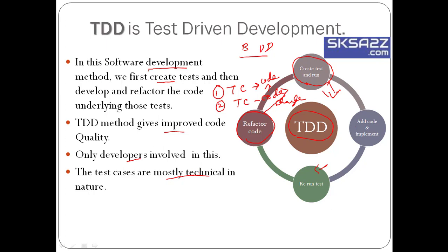To clarify again: TDD is a software development method. Initially, we create the test, then develop the code and run the test. If any changes are required, we rerun the test and change the code, then rerun the test again.